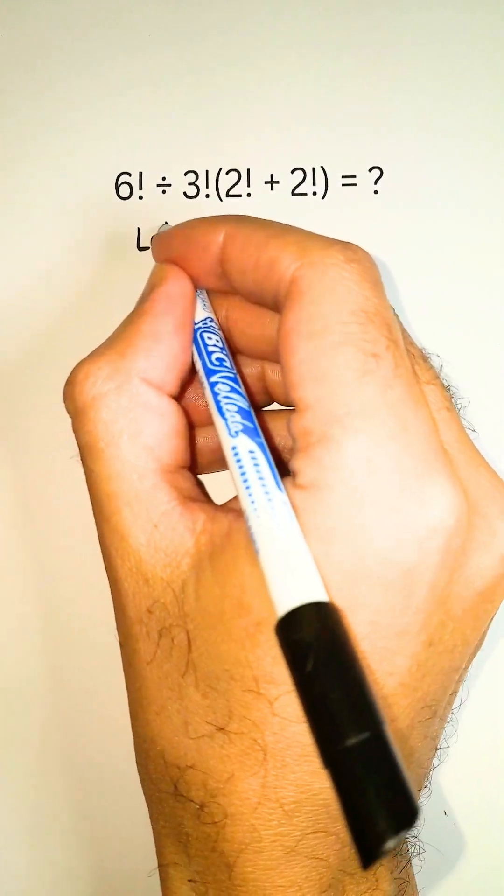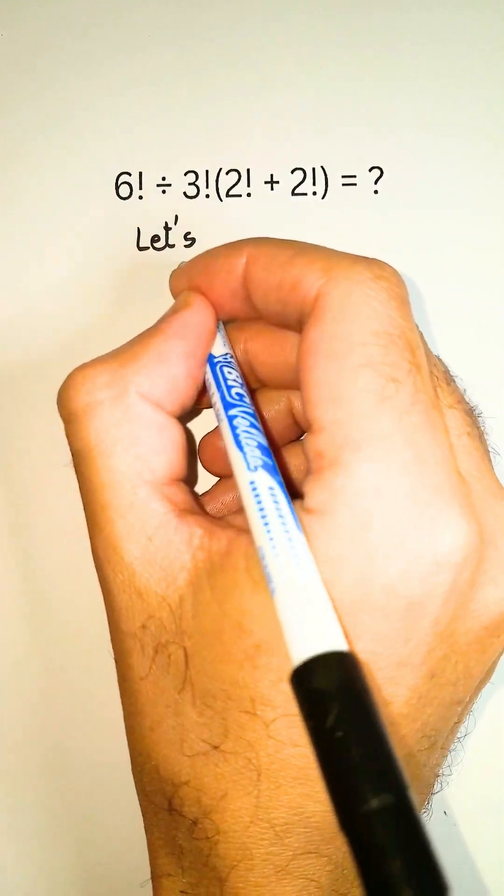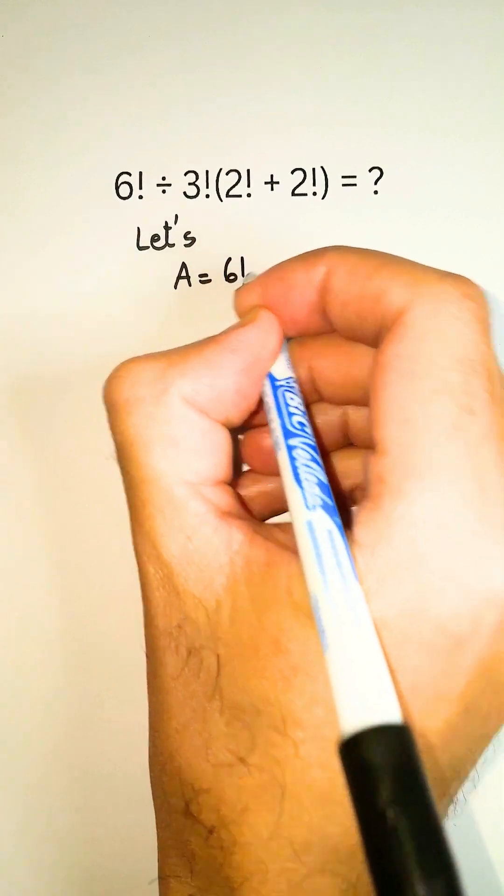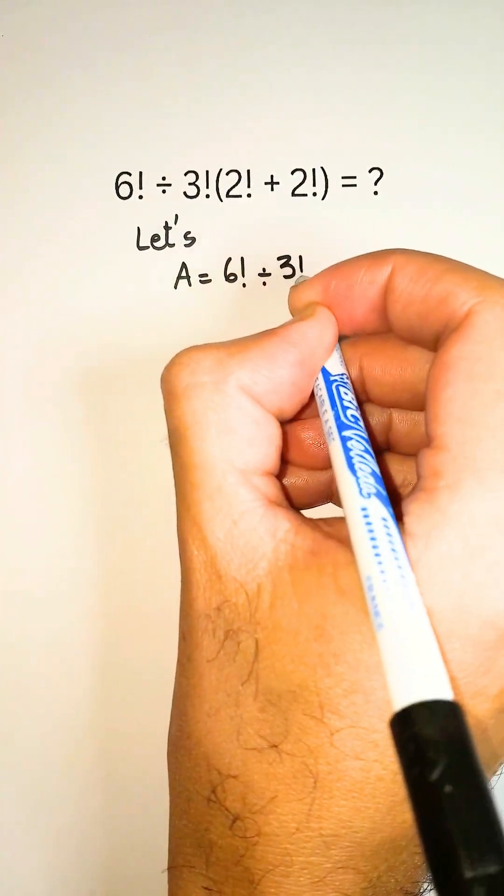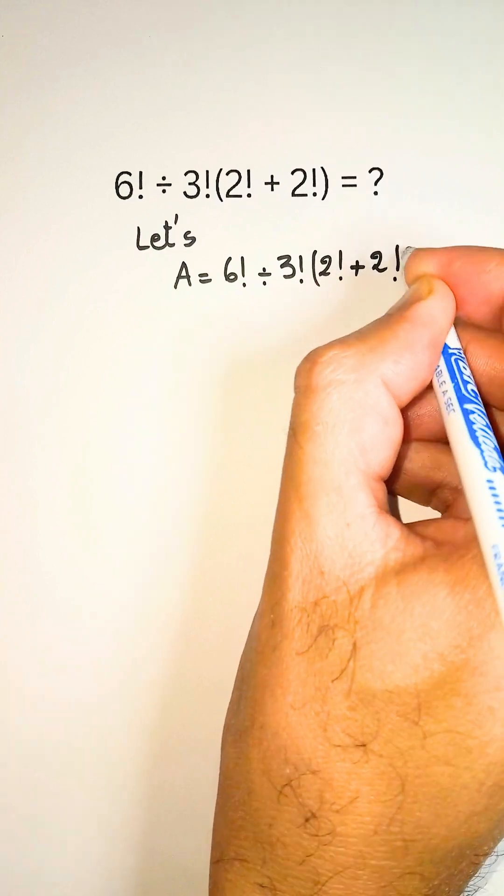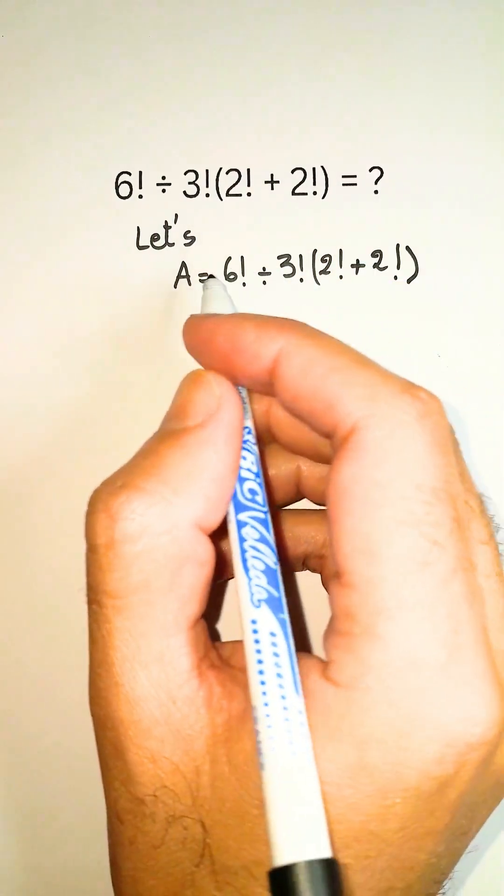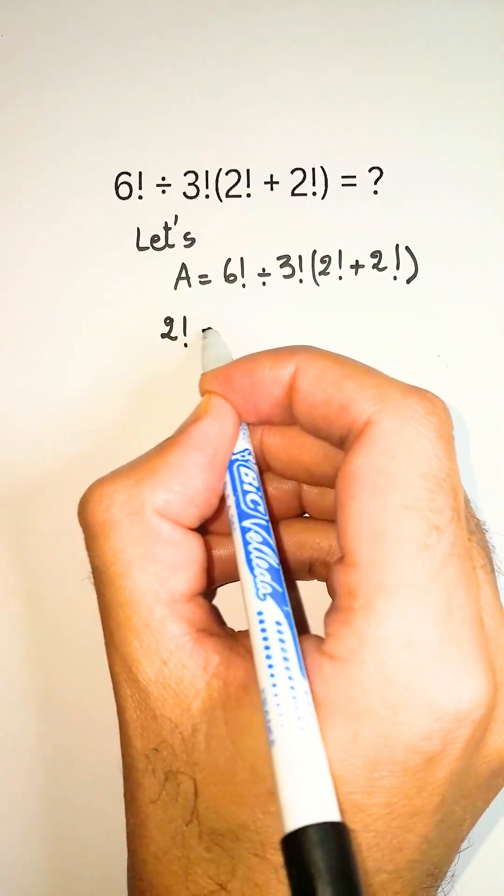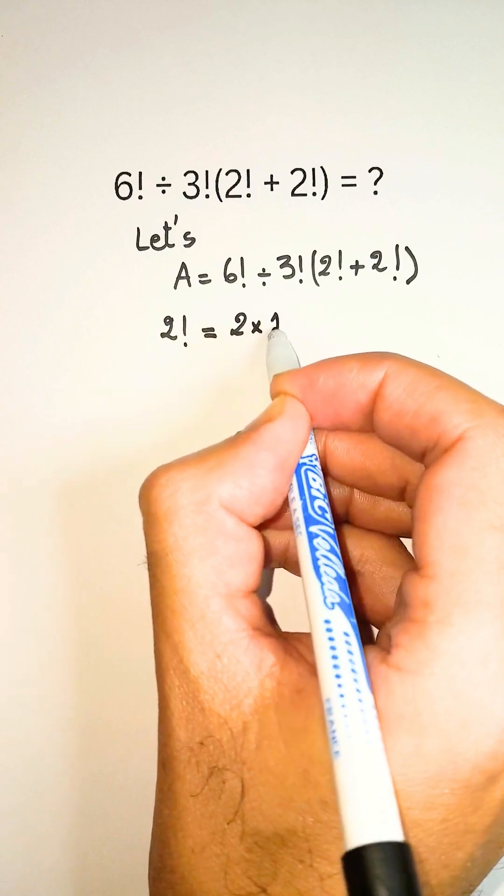In today's video, we're simplifying this expression, a factorial divided by a smaller factorial multiplied by a sum of two identical factorials. Let's say a equals 6 factorial divided by 3 factorials times 2 factorial plus 2 factorial.